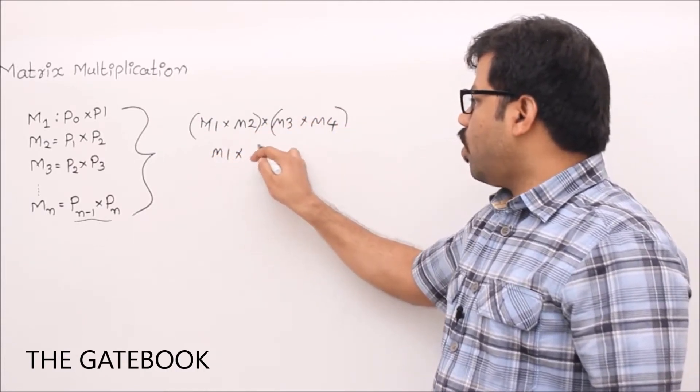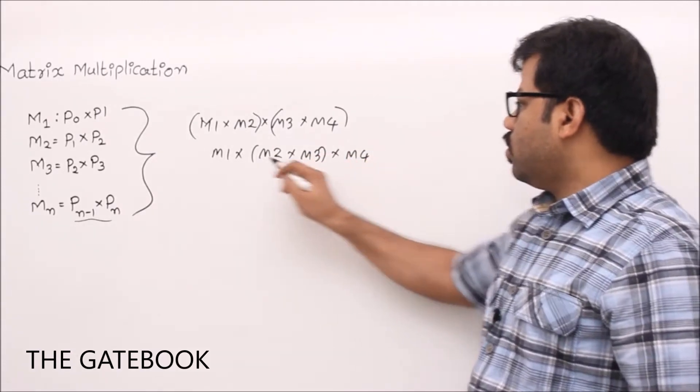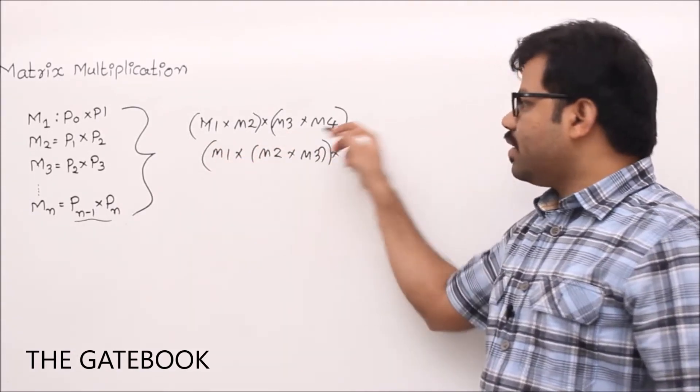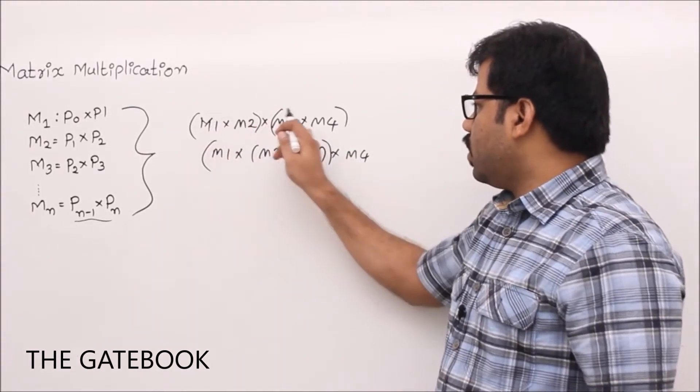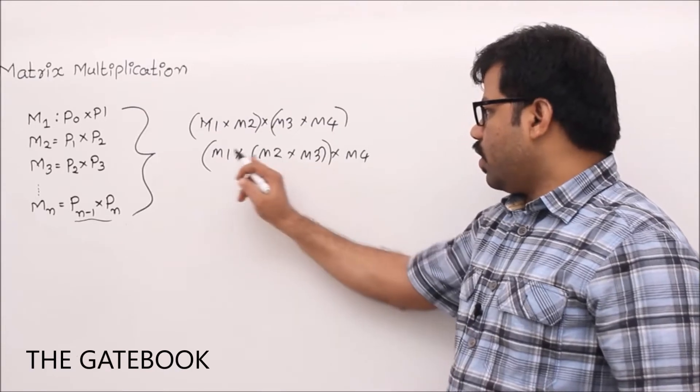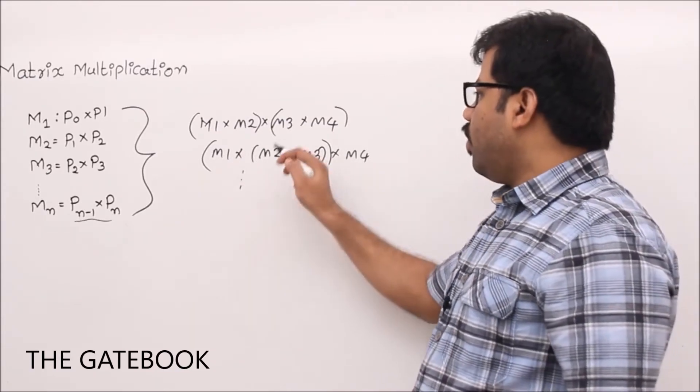This is the way - we have to parenthesize the problem. See here, first this one, after that this one result, then here first this one, after that this one. In that way I'm parenthesizing. You know one thing - the number of ways of parenthesizing four matrices, if you list out you understand the problem.